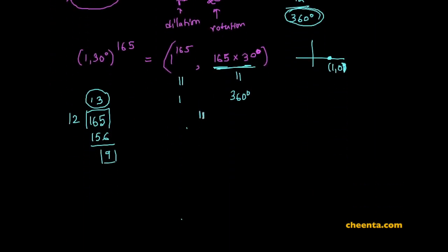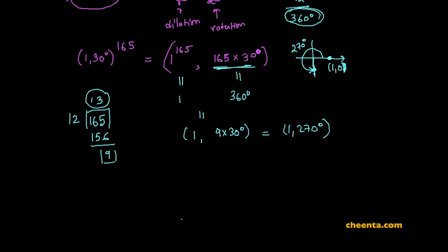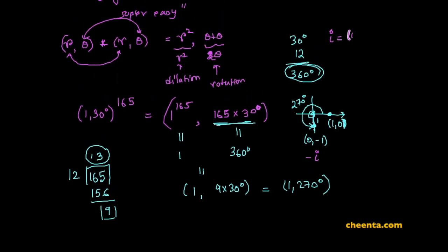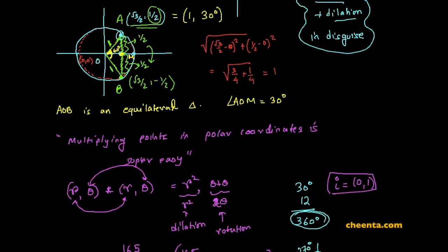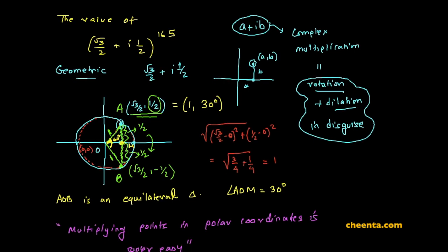That means this is equivalent to (1, 9 × 30°) = (1, 270°). The point at 270° from the positive x-axis, 1 unit from the origin, is the point (0, −1) — or in complex number terms, simply −i. Remember, the point i is simply (0, 1). The reason I took time to explain the geometric aspects is that this problem gives you an insight into how complex numbers actually work and what they are.